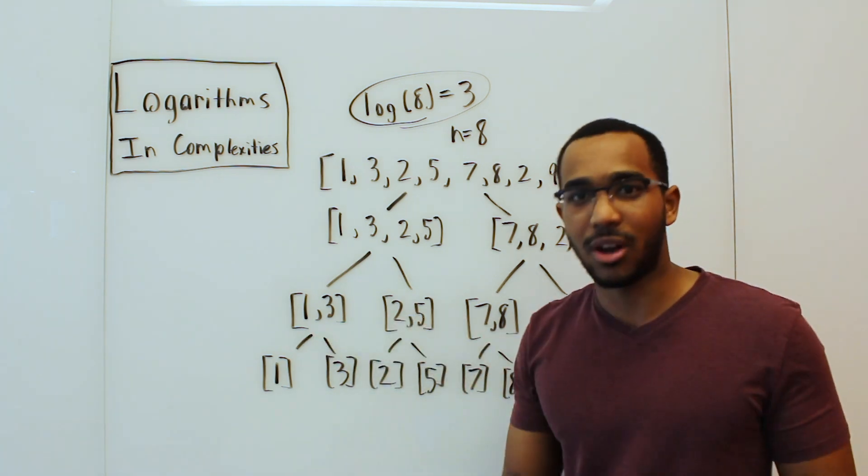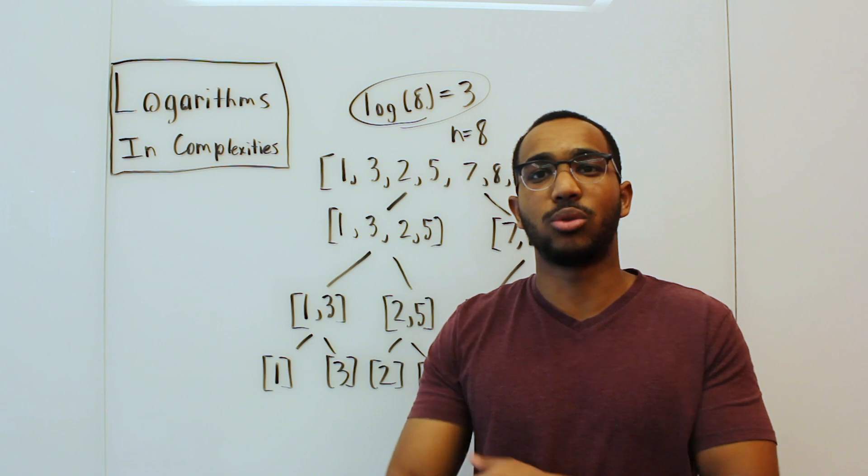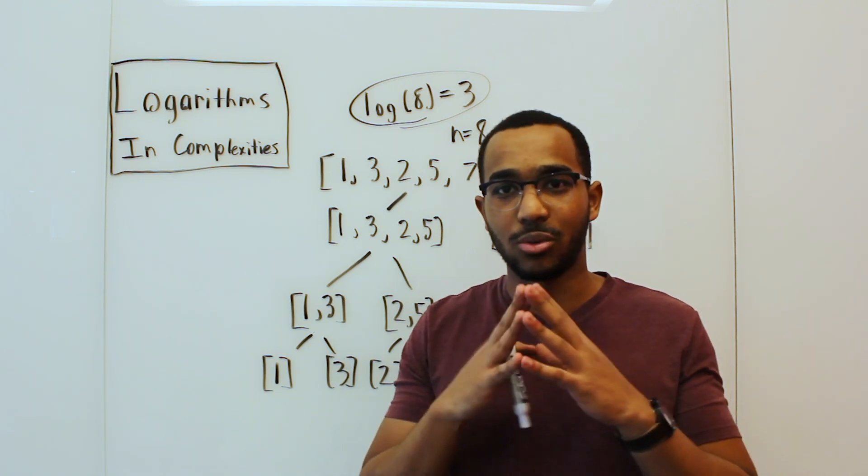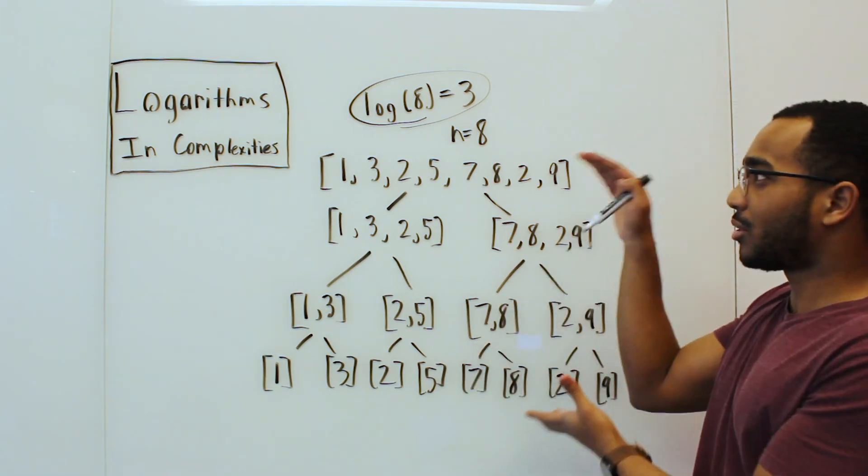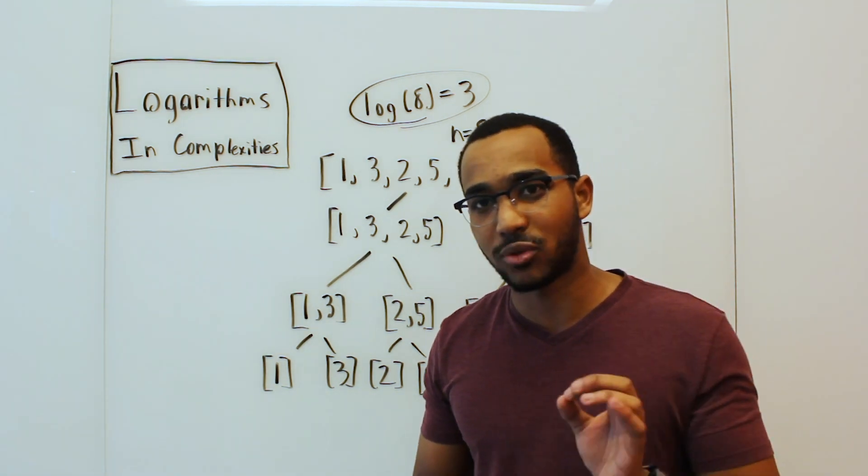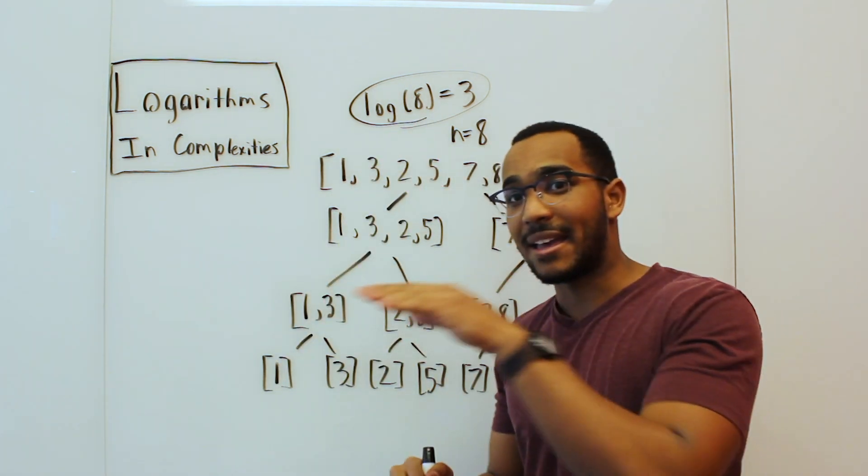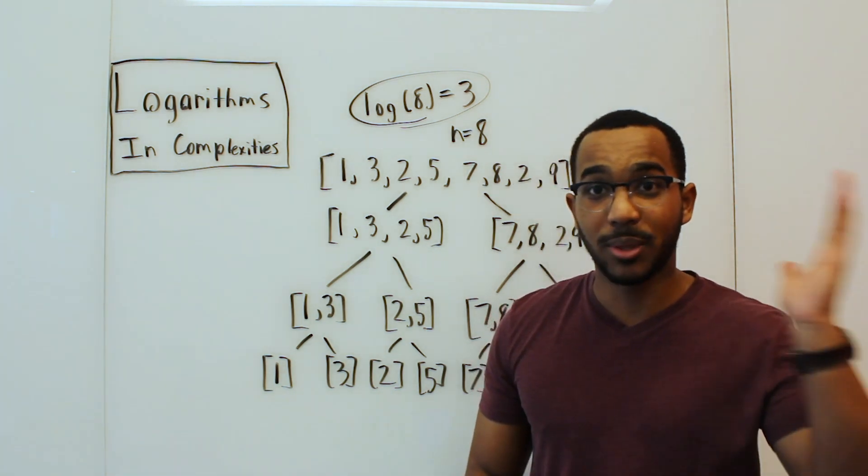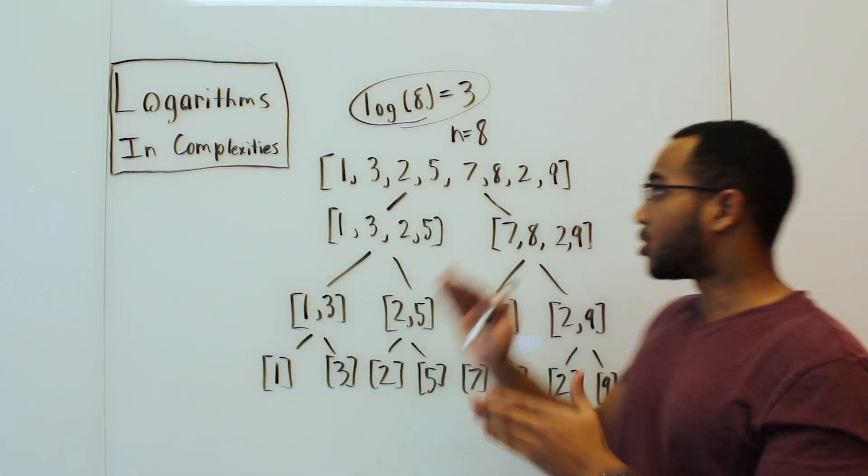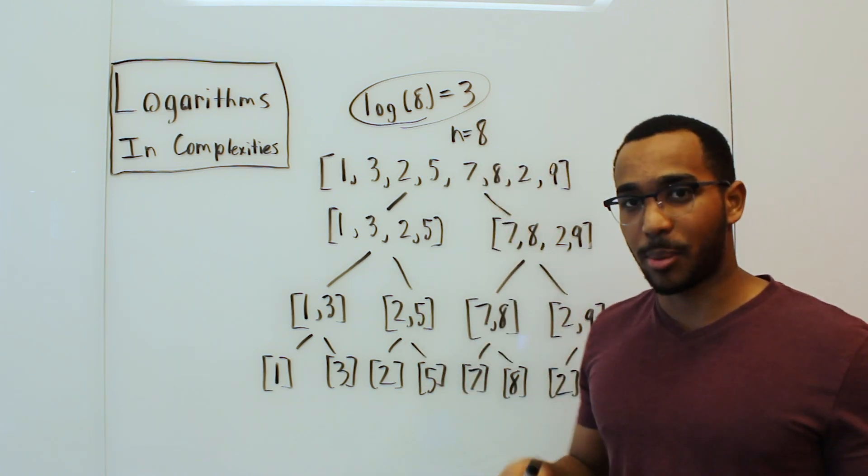On each of those levels of work, we do about linear work. Now the recurrence relation and the actual complexity gets a lot more fine-tuned than that in terms of the exact operations we do. But this is a general overview of where that n log n comes from. We have log n levels of work, and we're going to be doing a certain amount of work for each level. That's why we do a multiplication against the logarithm.